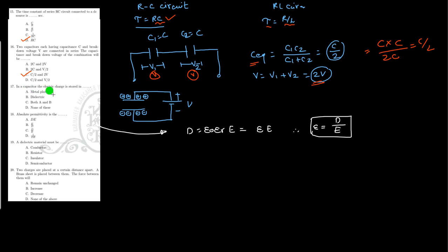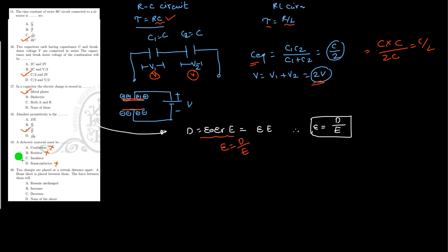In a capacitor, the electrical charge is stored in the metal plates. Absolute permittivity: we know that Epsilon₀ = D/E, so from this formula option C is correct. A dielectric medium must be insulating — it should not be conducting, not resistive, and not a semiconductor; it must be an insulating material.